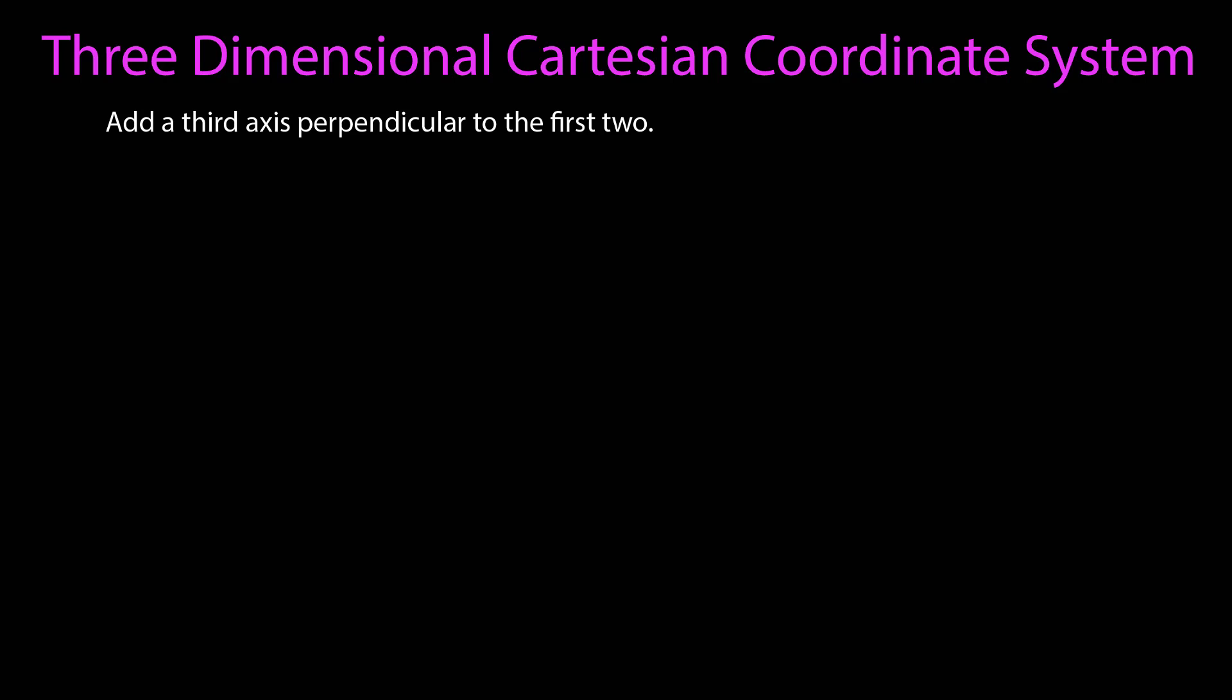In this video, we're going to look at three-dimensional Cartesian coordinate systems. In principle, it's easy enough. We need to add a third axis that's perpendicular to the first two.